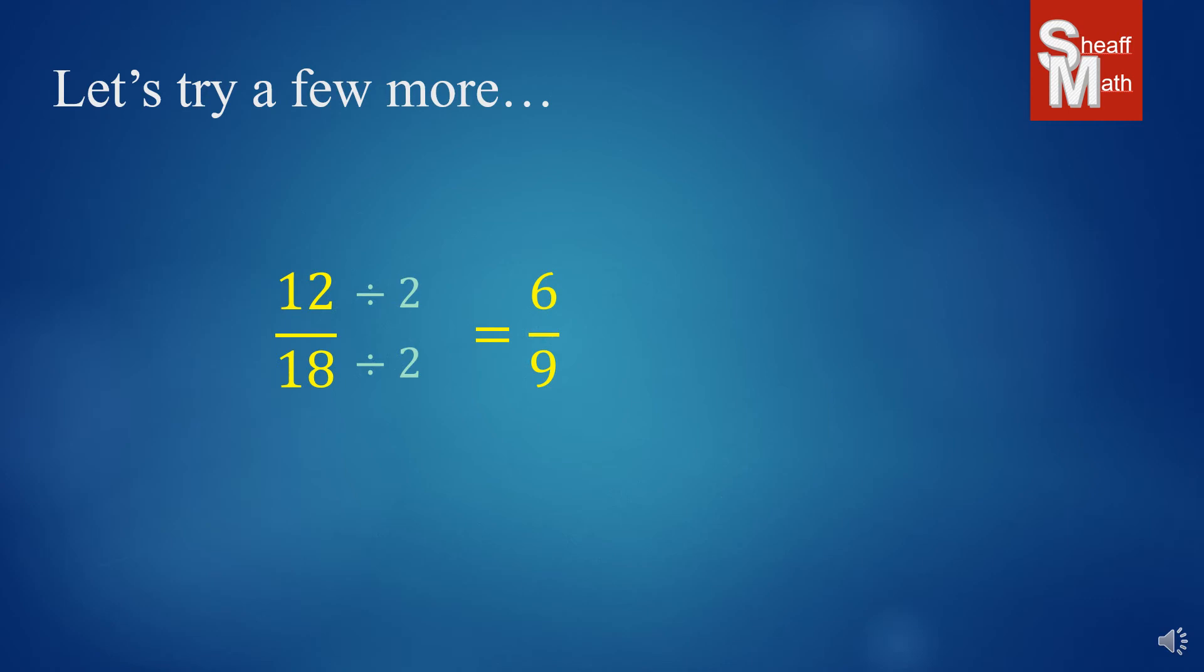But I know that three goes into both of those because I know my multiplications. So I'm going to divide by three over three, giving me two thirds. And there's no other number besides one that can go into two and three. And so that is my final answer.